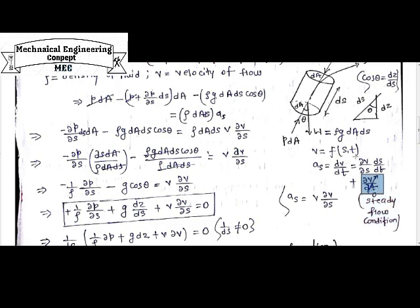So the resultant will be delV by delS by dS by dt. dS by dt can be written as velocity, velocity component V. delV by delS is the resultant. Putting this here.